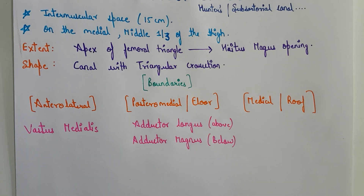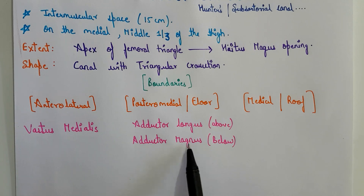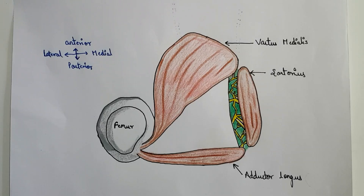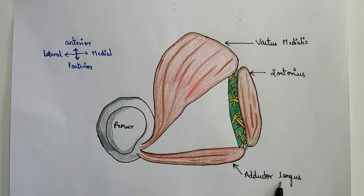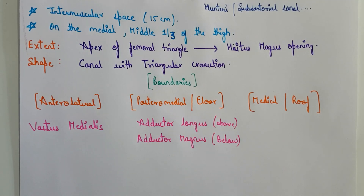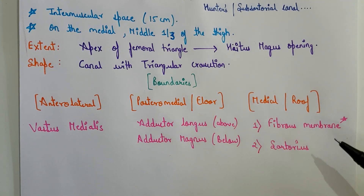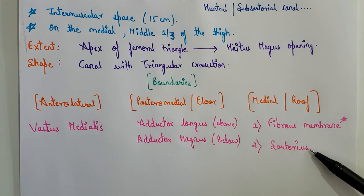The posteromedial boundary is formed by the adductor longus above and the adductor magnus below. The medial boundary or roof is composed of a strong fibrous membrane which is overlapped by the sartorius muscle.